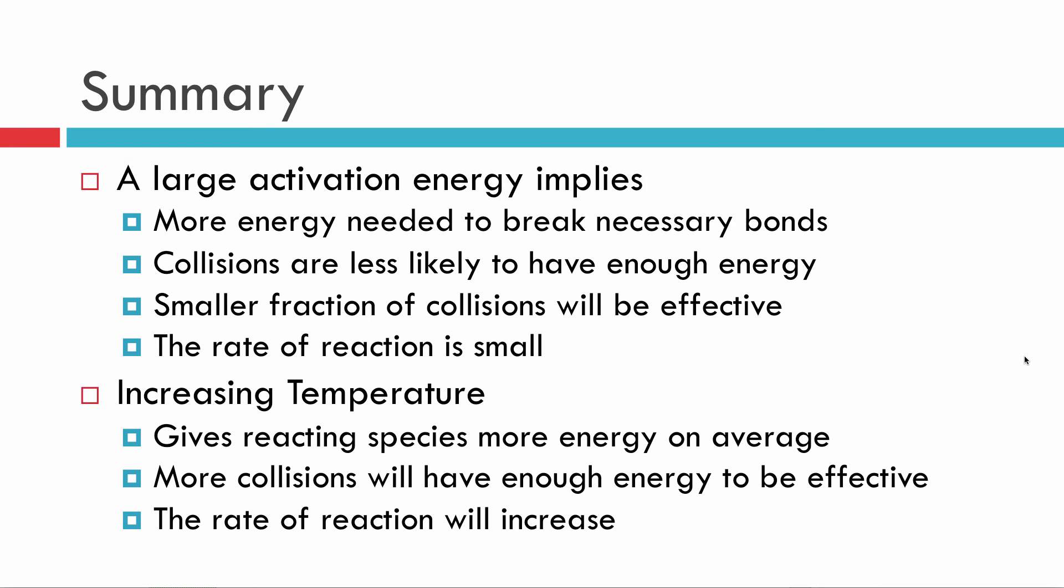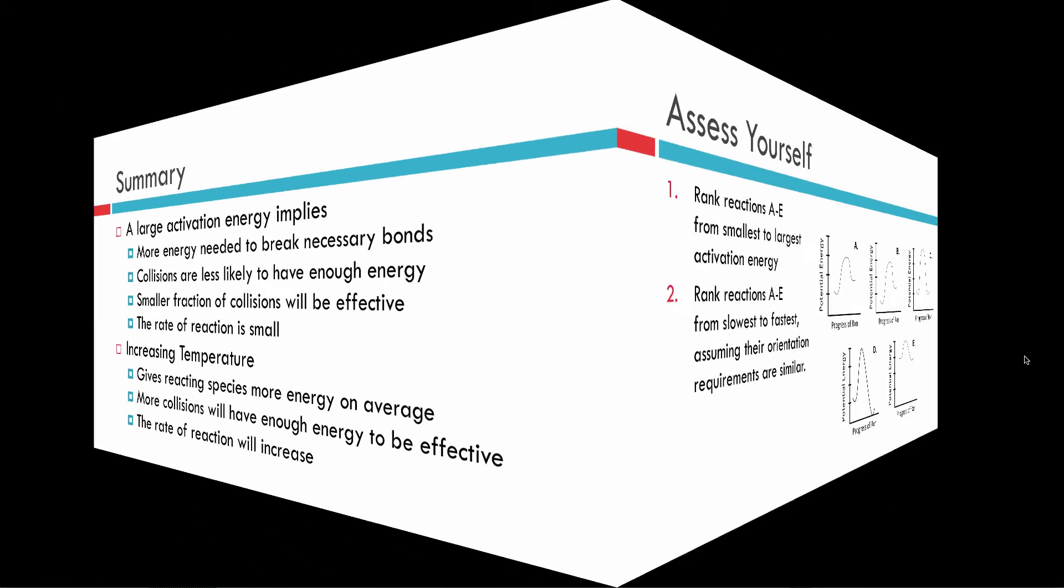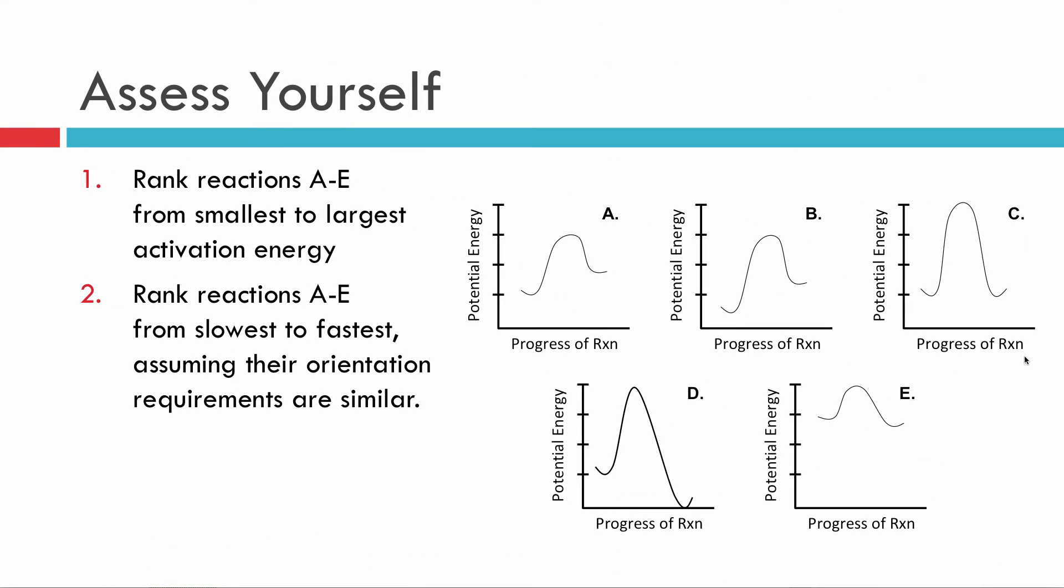All right, this said, you should now be well equipped to answer the following assessment. So here we have five reactions A, B, C, D, and E. We want you to rank them from smallest to largest activation energy and then rate them from slowest to fastest reaction, assuming that they have very similar orientation requirements during their collisions.